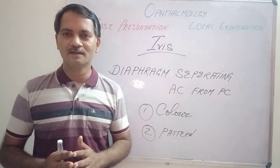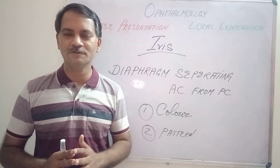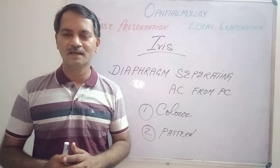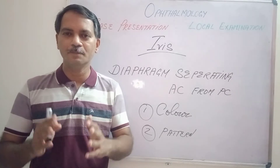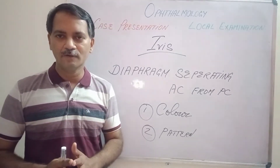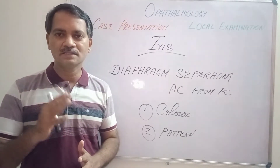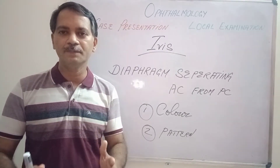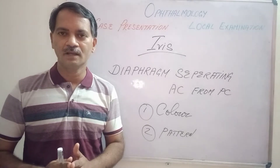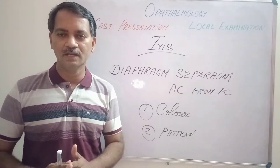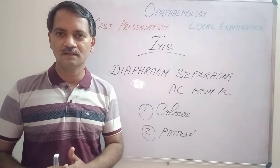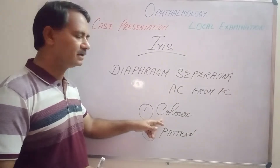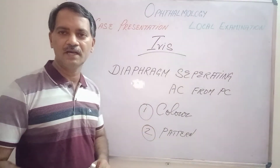Hi friends, once again we are in ophthalmology for undergraduates and postgraduate beginners. Iris is an important structure in our eye. Iris is nothing but a diaphragm separating the anterior chamber from the posterior chamber. While we examine the iris in ophthalmological examination, the following two things we have to look for: one is the color of the iris, another is the pattern of the iris.